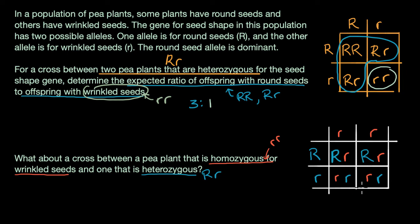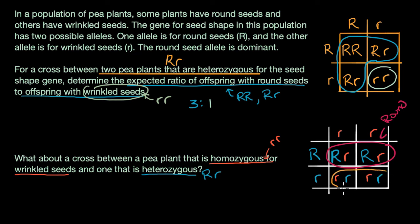Which of these genotypes would have a phenotype of round seeds? Round seeds are scenarios where you have at least one of the round seed alleles — so these capital R, lowercase r combinations are all going to have a phenotype of round seeds, because the round allele is dominant. Even though you have one of each, the dominant allele is what's expressed in the phenotype. And then the lowercase r, lowercase r combinations are going to be wrinkled. So the ratio of round to wrinkled is going to be one to one — for every two round, you have two wrinkled, and two to two is the same as one to one.